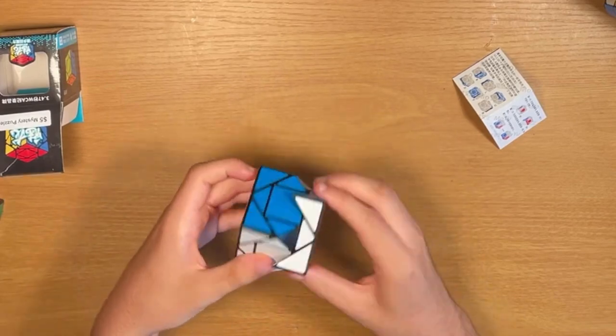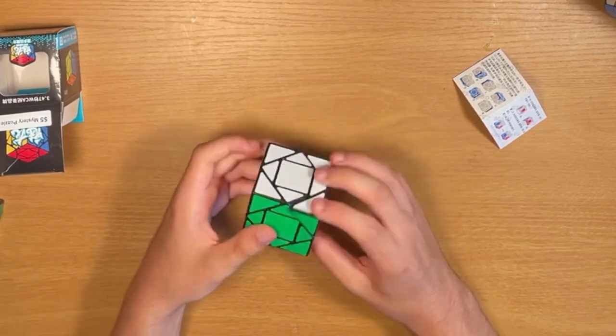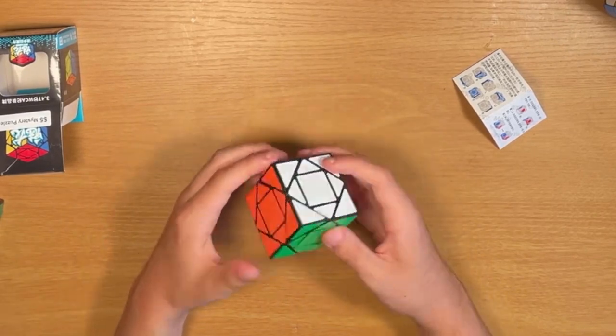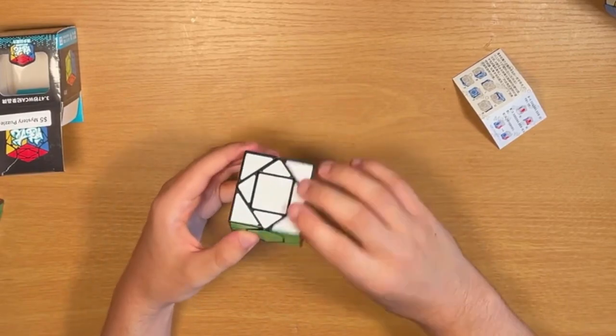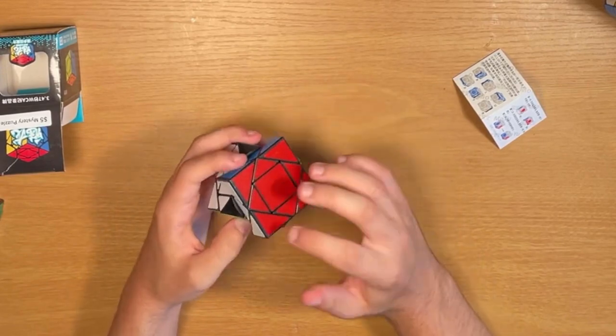Now, there's a bit of locking up just because I'm not super used to how this puzzle turns. Could take a while to get used to, but I think it's just a 3x3. For example, this is like an R move, and the layers are like this center, edge, edge, edge, edge, and then the corners here.